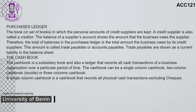The cash book is a subsidiary book and also a ledger that records all cash transactions of a business organization over a particular period of time. The cash book can be a single column cash book, two column cash book, or three column cash book. A single column cash book is a cash book that records all physical cash transactions excluding checks.